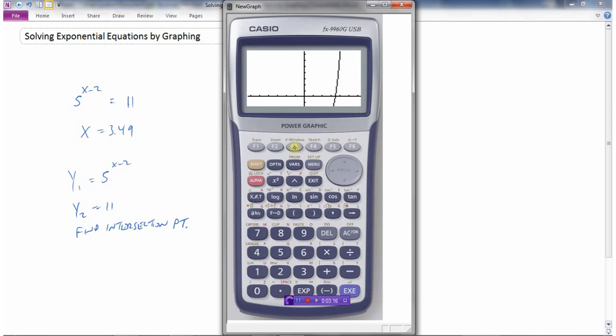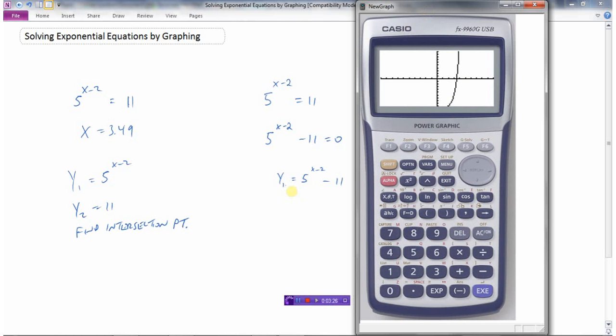And so I could go back to my view window here. Let's go minus 10, 10, minus 10, 10. So here's the graph of this function here: y1 equals 5 to the power of x minus 2 minus 11. And now I want to know where does this function equal zero. So if I go g solve and I hit the root, f1—notice this gives me the exact same answer as this one over here: x equals 3.49.